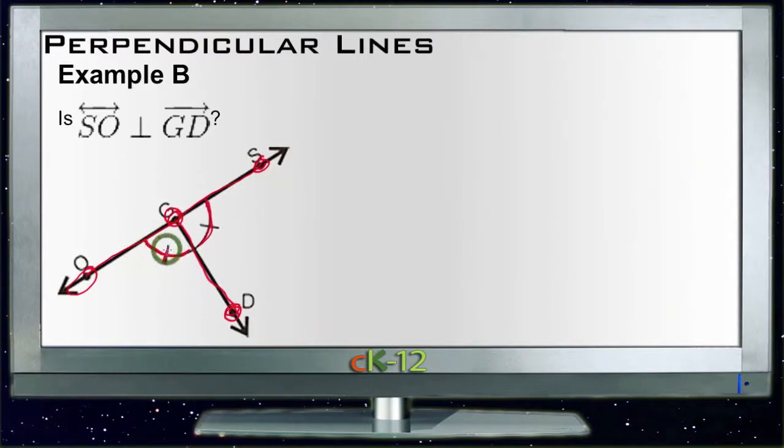Well we know that angle SGD is equivalent to OGD because they're marked that way. So we know that GD is the bisector for angle OS. So we take a look at angle OS from here to here, or from here all the way around to here. OS are a linear pair.